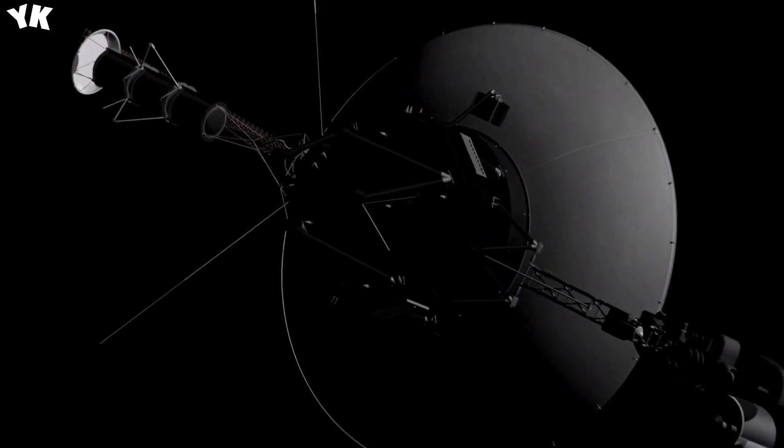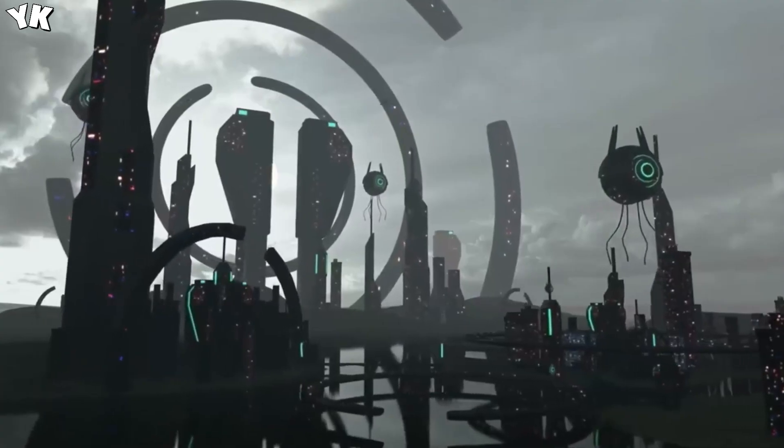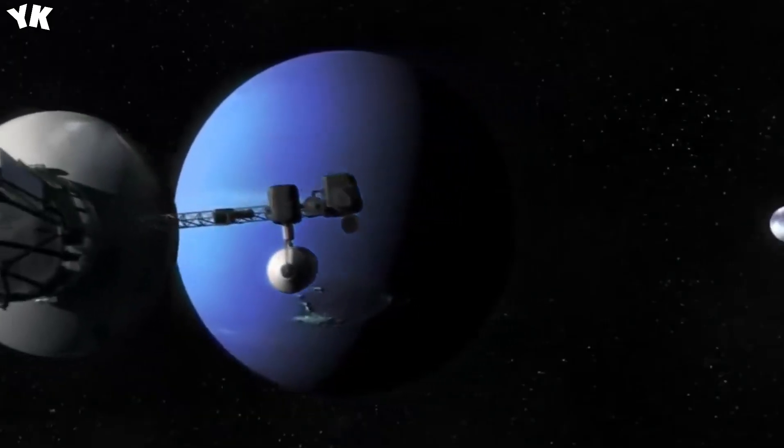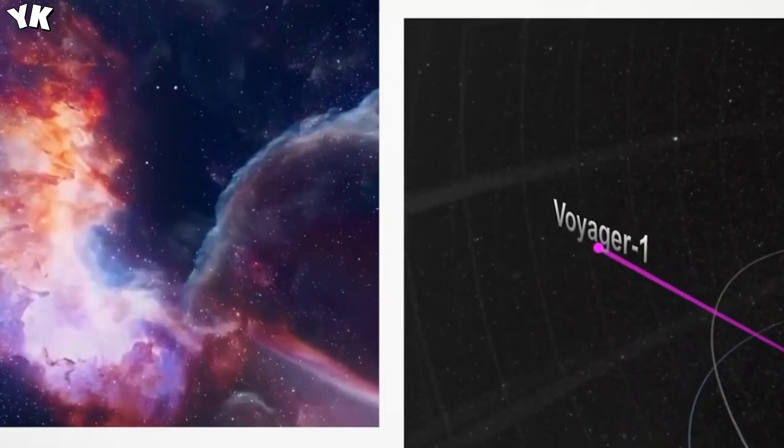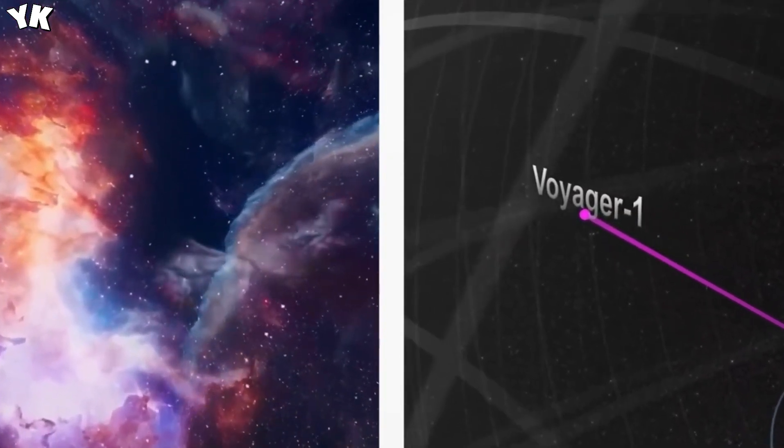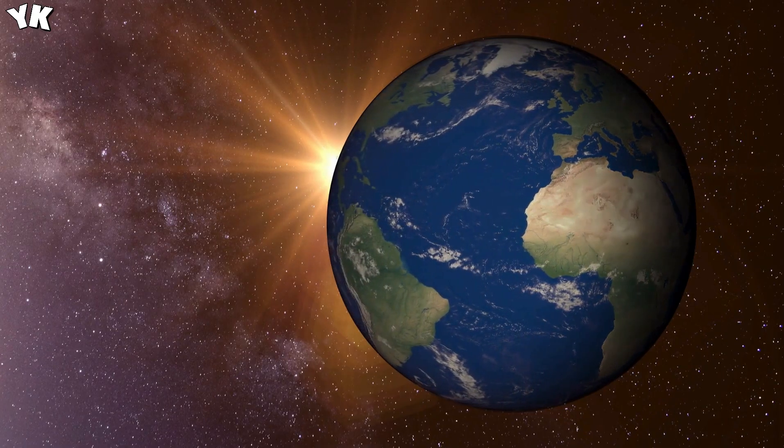Join us as we delve into how Voyager 1 spotted 300 unknown objects traversing space. While we marvel at Earth's natural wonders, the majestic waterfalls, towering mountains, and vibrant ecosystems, it's sobering to realize our planet is but a speck in the vastness of space.